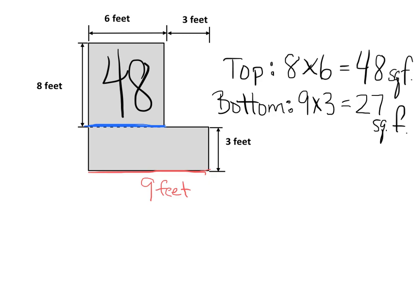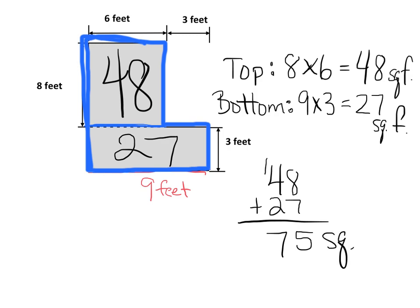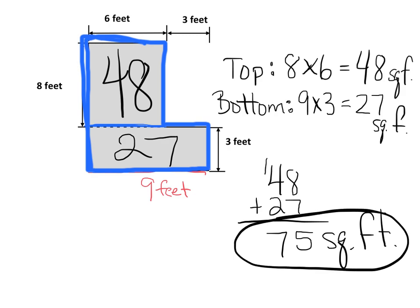To find the area of the whole figure, we add the two answers together: 48 plus 27. Adding the ones place, 8 plus 7 gives us 15 — carry the one. Then adding the tens: one ten plus four tens plus two tens is seven tens. So our total answer is 75 square feet.